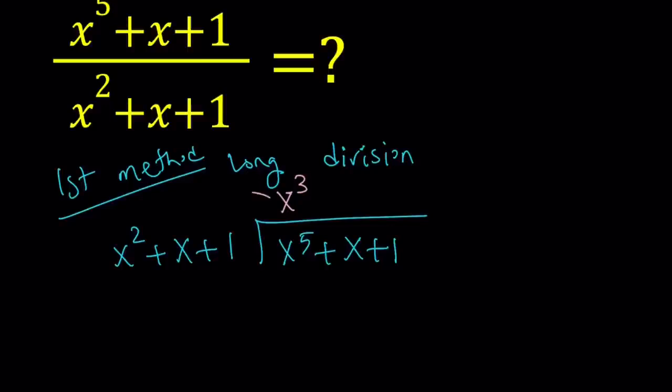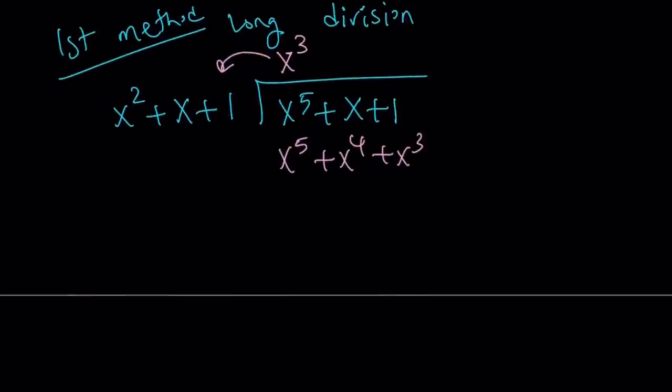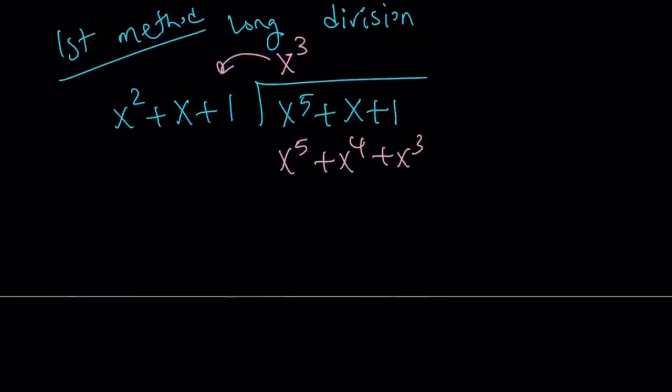Now I'm going to go ahead and distribute the x to the third here by multiplying. And that's going to give me x to the fifth plus x to the fourth plus x to the third. In long division, you remember, we subtract, but with polynomials, we kind of negate the second one and add. That is equivalent to subtracting.